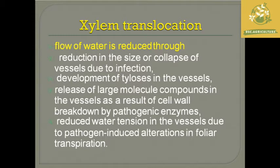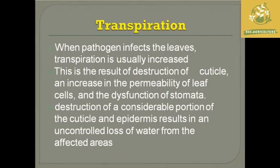In xylem translocation, water flow is reduced through reduction in size or collapse of vessels due to infection, development of tyloses in the vessel, release of large-molecule compounds causing cell wall breakdown by pathogenic enzymes, and reduced water tension in vessels due to pathogen-induced alterations. These are the main causes of disrupted water translocation in the host plant's xylem vessels.